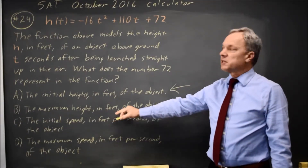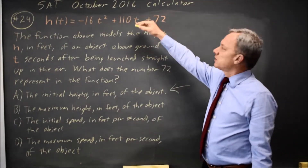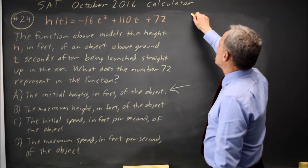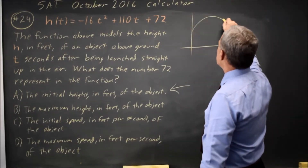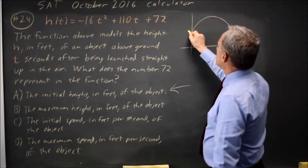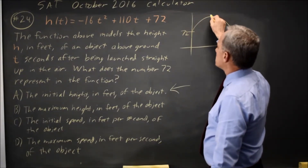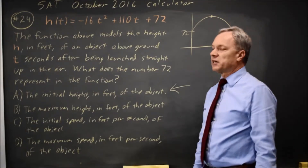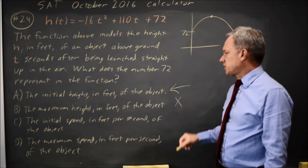Choice B is the maximum height. If I graph this parabola, it looks something like this, where 72 is the starting point and the maximum is significantly higher. So choice B is incorrect.